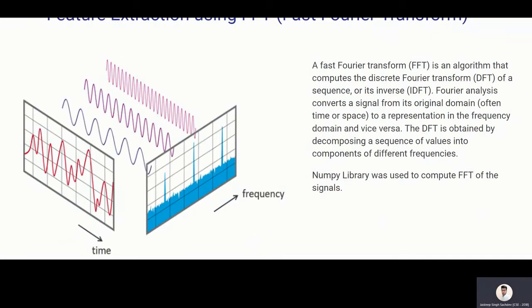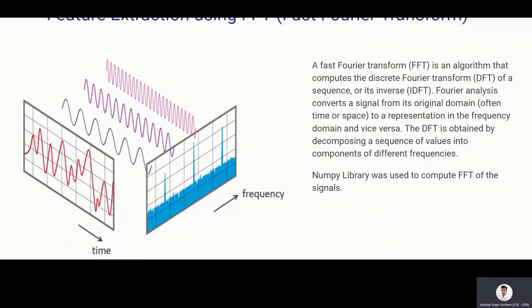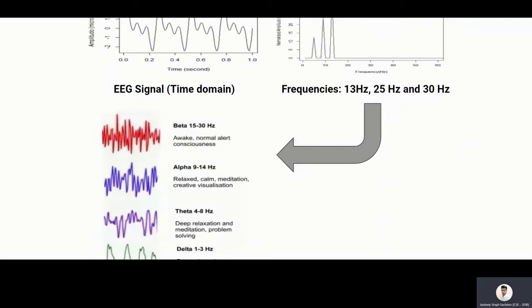Now, the feature extraction using FFT. So what is FFT? You can see that the red signal is the original signal and we can divide this signal into different frequencies. These frequencies then can be classified into different ranges. I applied it using NumPy library to compute the FFT of the signal.